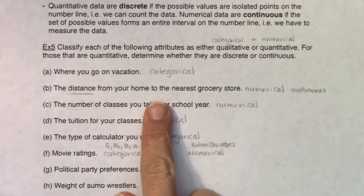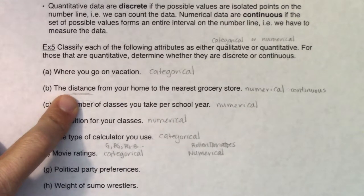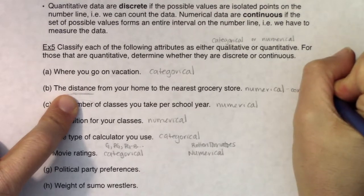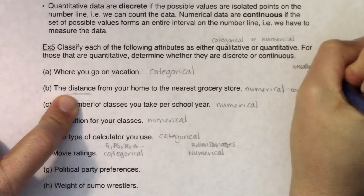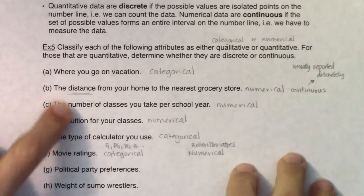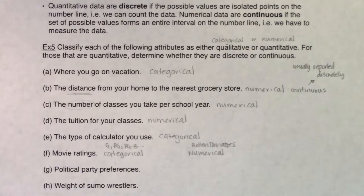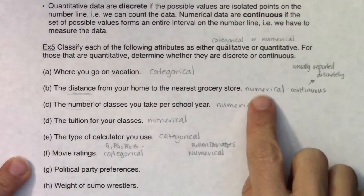Since we measure distance we're going to call it numerical continuous. But here starts our first look at the gray area. Distance is always numerical continuous, but we tend to report it discretely. What I mean by this is we tend to round in the real world. I wouldn't say I'm 1.4598 miles from the nearest grocery store. I'd just say I'm 1.5 miles or one and a half miles.